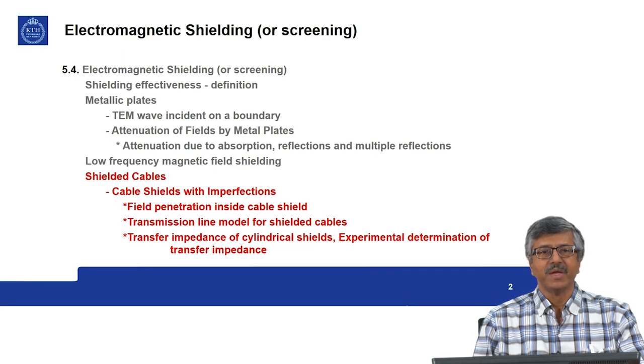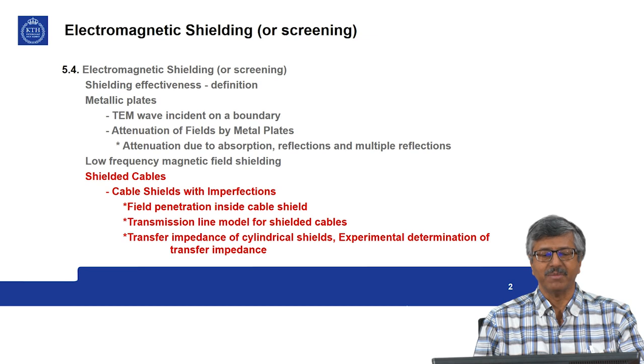Solution to EMC Problems. In module 5.5 we will look into the problem of shielded cables. Previously you have seen shielded cables as a perfect shielded cable. Now in this module we will look at real shielded cables in which there is some leakage of electromagnetic fields, and we will try to quantify this leakage in terms of models. The main contents are: cable shields with imperfections, the different kinds of imperfections, a transmission line model for shielded cables, the concept of transfer impedance for cylindrical shields, and experimental determination of transfer impedance.